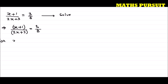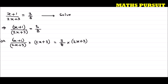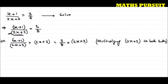I can write x plus 1 divided by 2x plus 3 is equal to 3 upon 8. Now I am multiplying 2x plus 3 to both sides. Why? I want to eliminate this 2x plus 3 from the denominator. In order to eliminate it, I need to multiply 2x plus 3 to both sides of the equation.